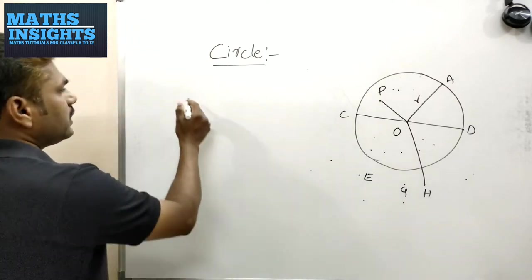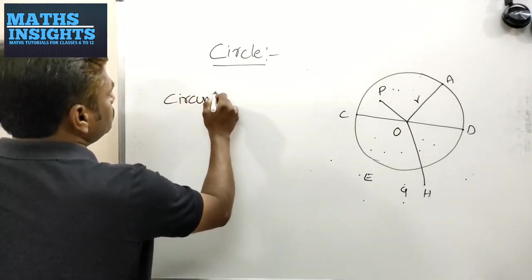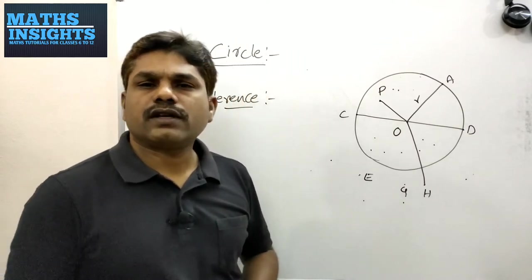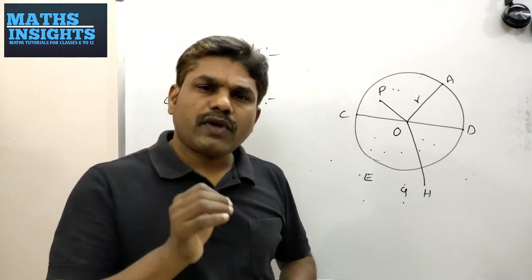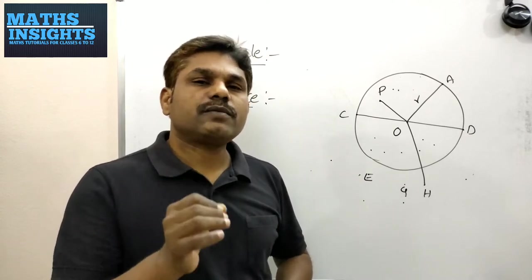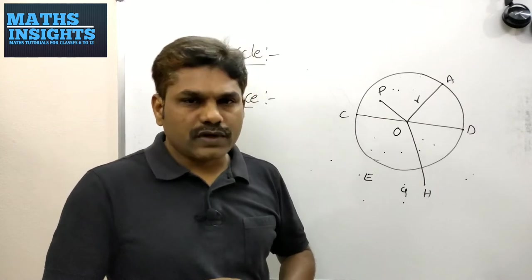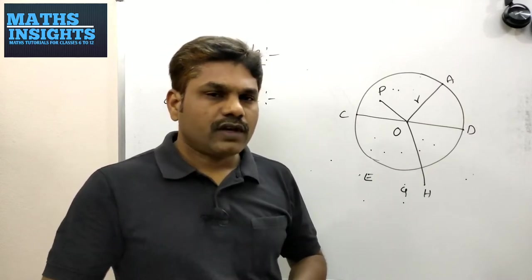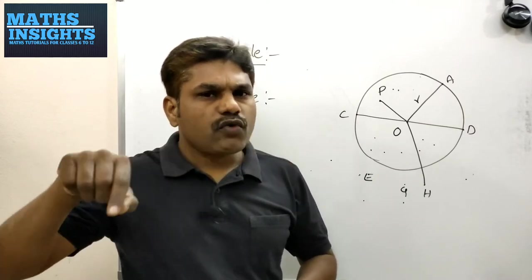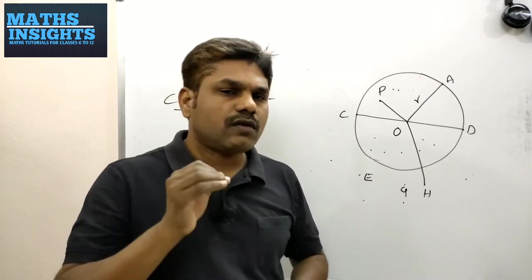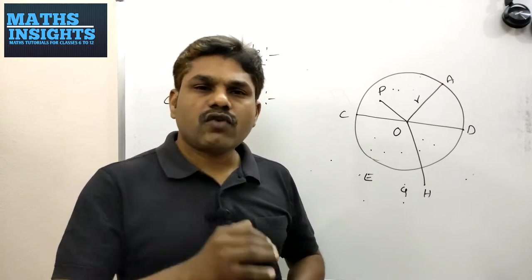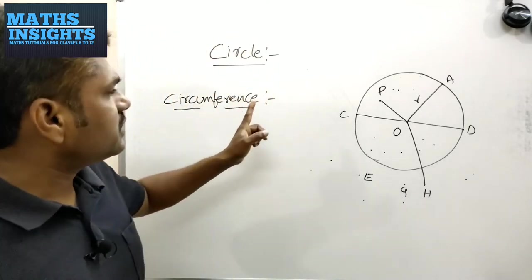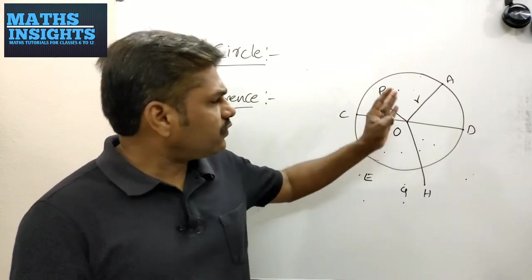Now coming to the circumference of the circle. In geometrical figures like squares, rectangles, and parallelograms, you come across the term perimeter. Perimeter is nothing but the length of the boundary — you may find the perimeter of your house by measuring the length of its compound wall. In a similar manner, for a circle you use a different word: circumference. Circumference is nothing but the perimeter of the circle.